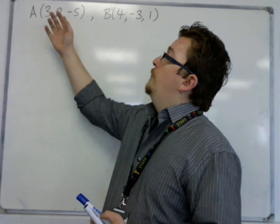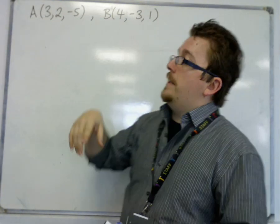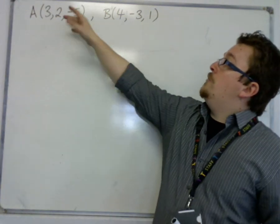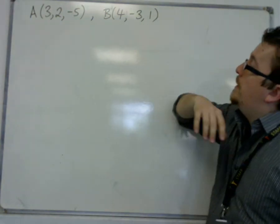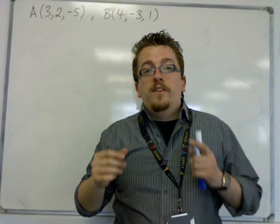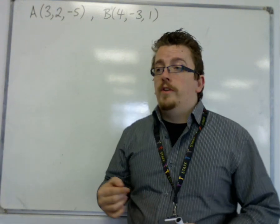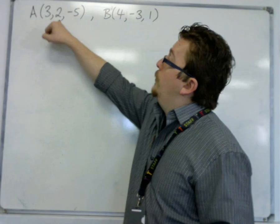So I'm going to start off with two coordinates, A and B. A is (3, 2, -5) and B is (4, -3, 1). These are three-dimensional coordinates because they include an x, a y, and a z.